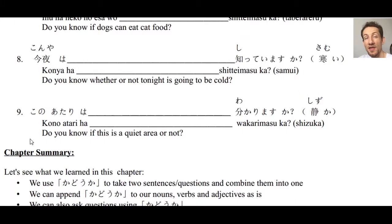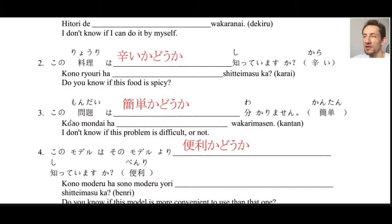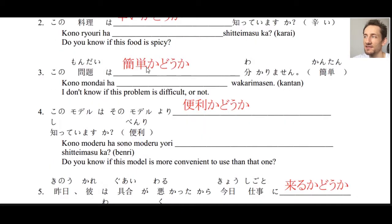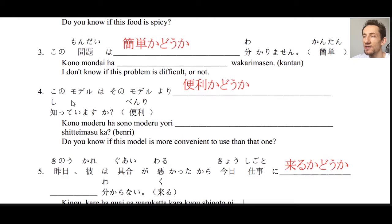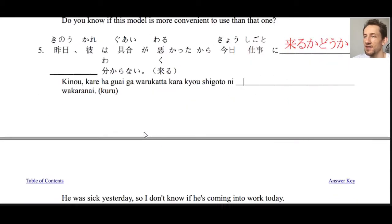Let's check the answers. Number one: ひとりでできるかどうかわからない — I don't know if I can do it by myself. Number two: この料理は辛いかどうか知っていますか？ — Do you know if this food is spicy? 辛いかどうか. Number three: この問題は簡単かどうかわかりません — 簡単 means easy or simple. Number four: このモデルはそのモデルより便利かどうか知っていますか？ — Do you know if this model is more convenient than that one? 便利かどうか. Number five: 昨日彼は具合が悪かったから今日仕事に来るかどうかわからない — Yesterday he was not feeling well, so I don't know if he's going to come into work today.